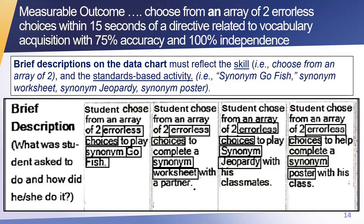This measurable outcome specifies that the errorless choice is related to vocabulary. So let's review the examples. If the teacher wrote 'the student made an errorless choice on a worksheet' without including information that it was a synonym go fish, or a synonym worksheet, or a synonym jeopardy game, or a synonym poster, it wouldn't have been clear how it matched the measurable outcome of being related to vocabulary. So to be really clear when writing your access skill brief descriptions, you want to be sure you're including the skill, the activity, and how it relates to the standard.